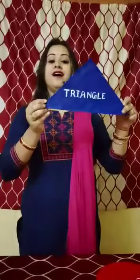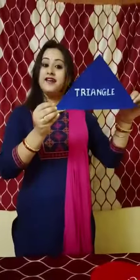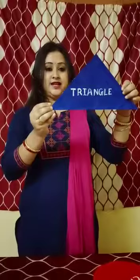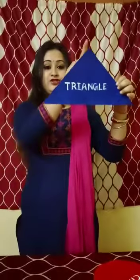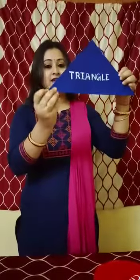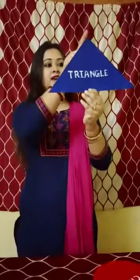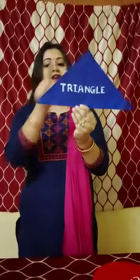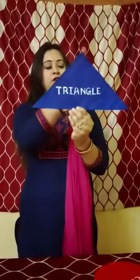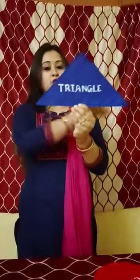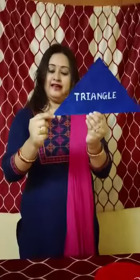And this is a triangle. Triangle means which has three angles. You can see it has three angles — these are called angles. One, two, three. These three are angles. So this is called triangle.